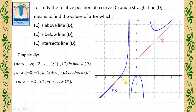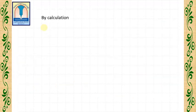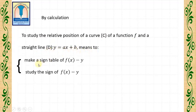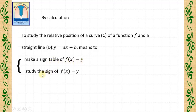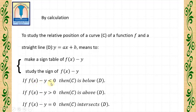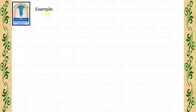And for X equals minus 2, C intersects line D. Now let us see it by calculation. To study the relative position of a curve C of a function F and a straight line D, Y equals AX plus B, means to make a sign table of F(X) minus Y and study the sign of F(X) minus Y. If F(X) minus Y is negative, then C is below line D. If F(X) minus Y is positive, then C is above line D. If F(X) minus Y equals 0, then C intersects line D.